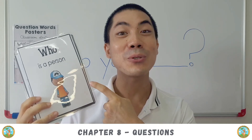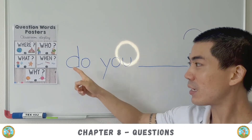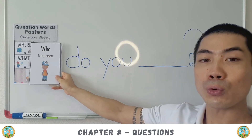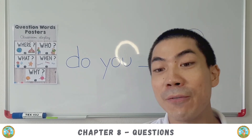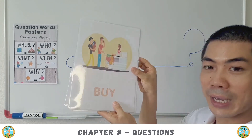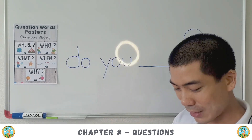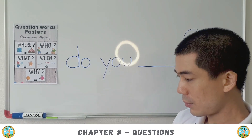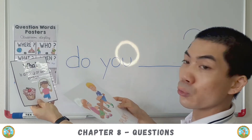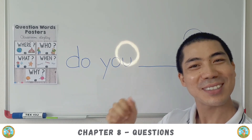Now let's use these words to make sentences. The first sentence we can learn is using 'do you.' We have verb words: buy, want, like, study, and play. If we use the word what, we can ask: what do you play? I play football.